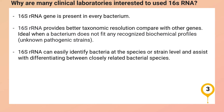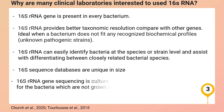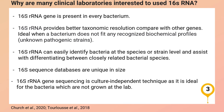16S rRNA can easily identify bacteria at the species or strain level and assist with differentiating between closely related bacterial species. More essentially, 16S rRNA sequences are unique in size. For instance, the NIH Human Microbiome Project contains 3,000 human microbiome samples from different human organs like the GI tract, nasal cavity, and skin. So almost every 16S sequence read can tell you which bacteria are present in a sample, making it perfect for labs all over the world to use. Finally, 16S rRNA gene sequencing is a culture-independent technique, so it is perfect for bacteria which cannot be grown in the lab.